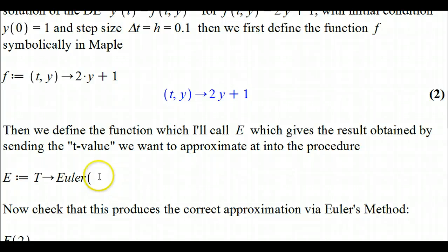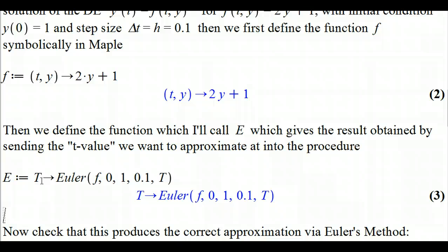Now we're going to define a new function, which we're going to call capital E. What we're going to do is send the t value we want to approximate at through the procedure. We're going to say it's f, which we just defined, and then the initial time was 0, the initial y value is 1, the step size is 0.1, and then t is t. That's going to send it through, and once we put a number into this function capital E, it'll give us a number back.